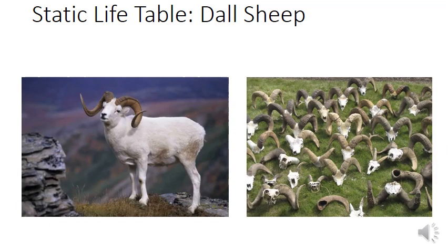A famous example of a static life table comes from the 1940s, when scientist Adolf Murie studied Dall sheep in Denali National Park in Alaska. He collected around 608 skulls of these sheep, and by using the rings on their horns he could age the skulls and determine the proportion of individuals that had died in different age classes.